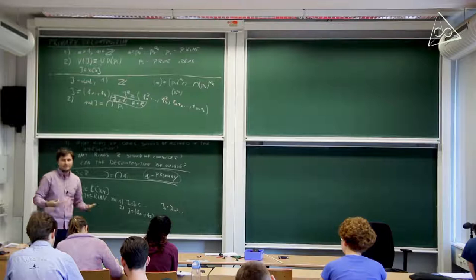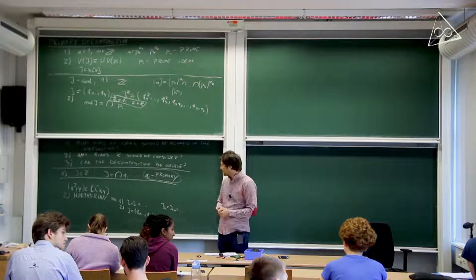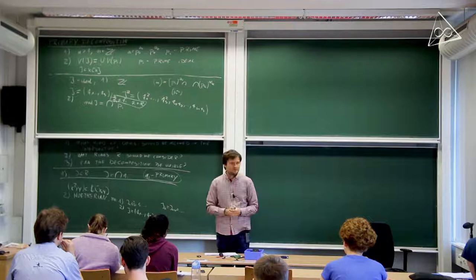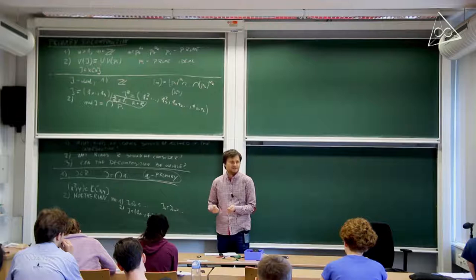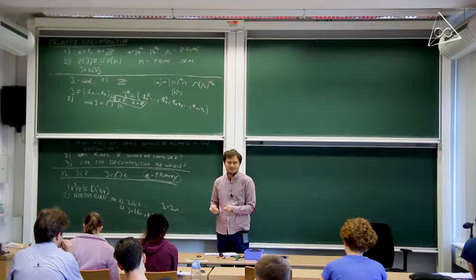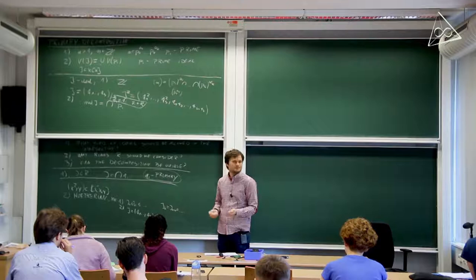To clarify a question: the ideal (x², xy) is contained in a unique prime (x,y), but it is not a power of that ideal. If it were an intersection of powers of primes, it would have to equal a power of (x,y) — but it's not the first power (that's (x,y)) and not the second power (that's (x²,xy,y²)).